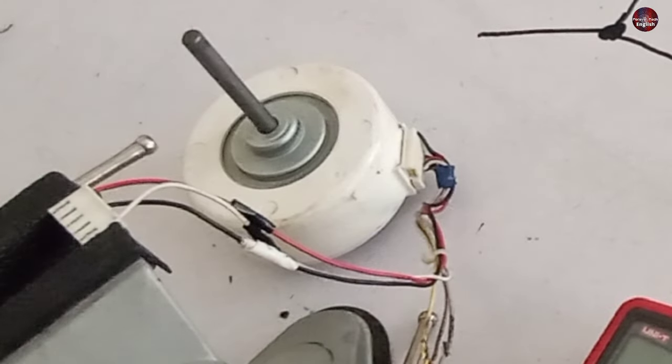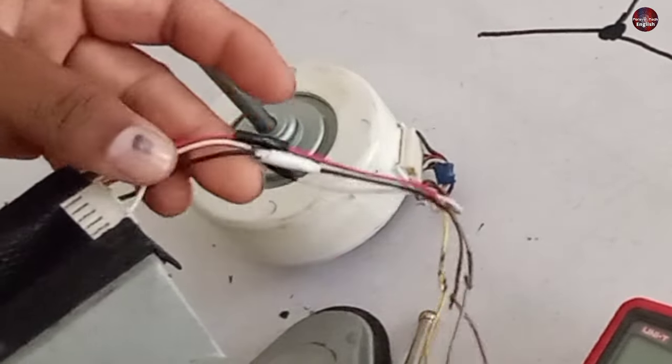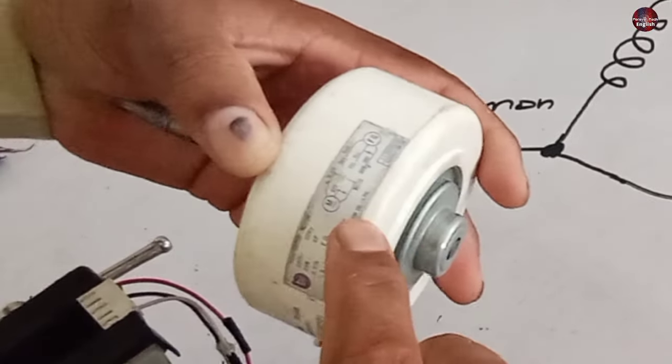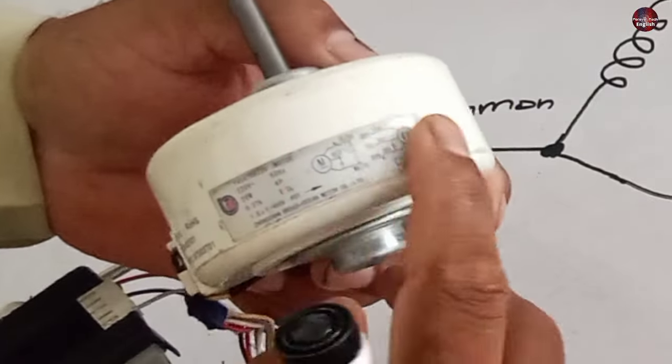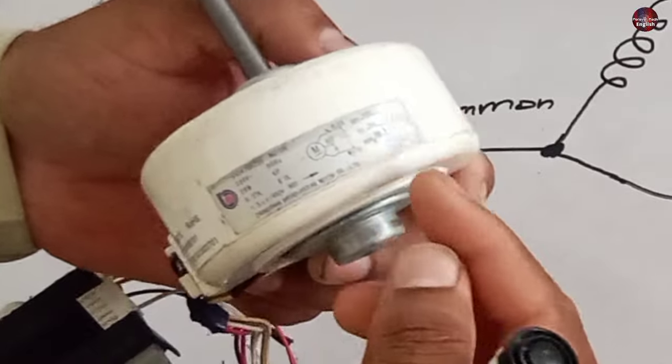Now, for example, the wires are not connected to the connector, and the diagram, due to any reason, is not present on the motor. Then how will you find which wire is common, run, and start?